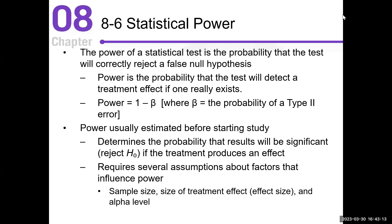Power is the probability that the test will detect a treatment effect when one actually exists. We wanted to determine the probability that we will detect something significant as far as the treatment when an actual treatment effect exists. We'll talk about several factors that influence power, like sample size, the difference between the population mean and the sample mean, and how variability impacts power. Sample size affects power. The common principle is: power is the probability that the test will detect a treatment effect if one really exists.